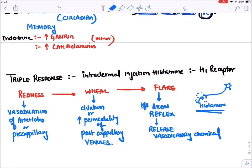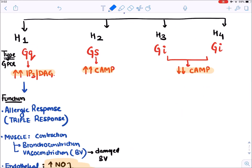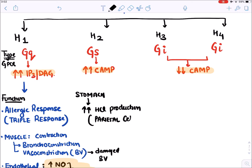H2 receptors are mainly present in the stomach, specifically in parietal cells. They are responsible for increasing HCl production by raising cyclic AMP levels. Blocking H2 receptors reduces cyclic AMP and reduces HCl production.